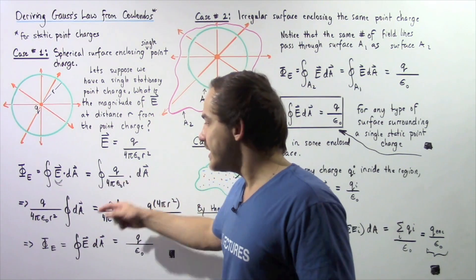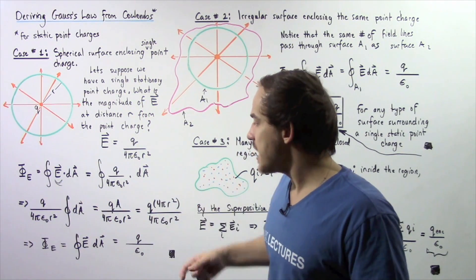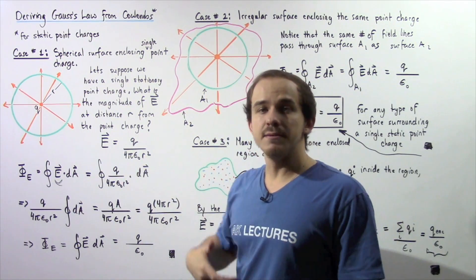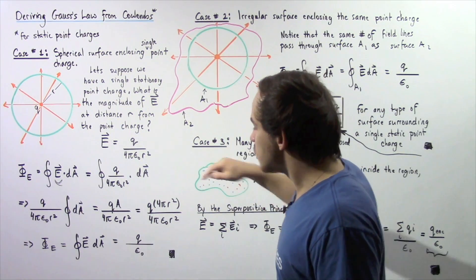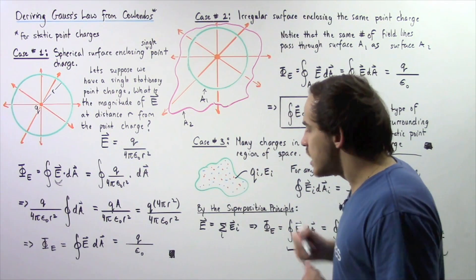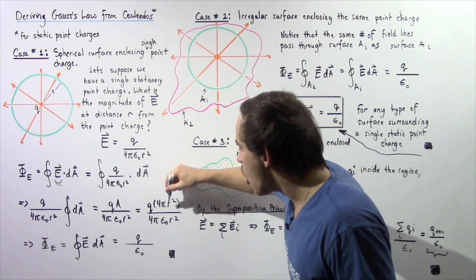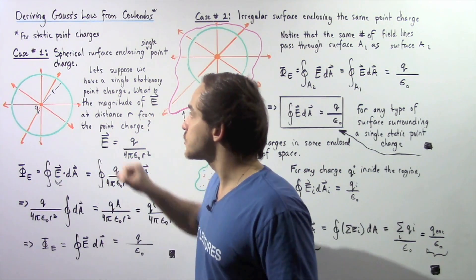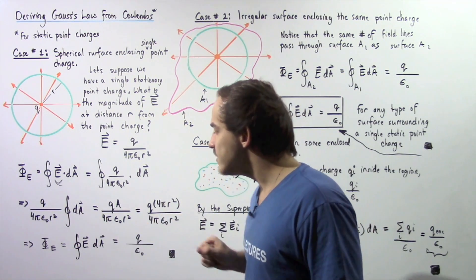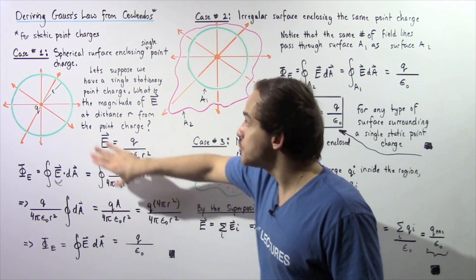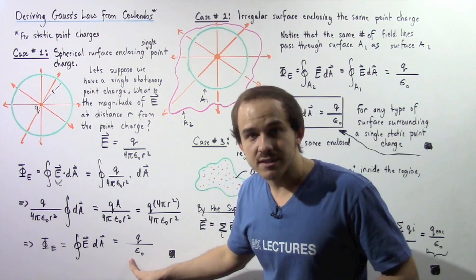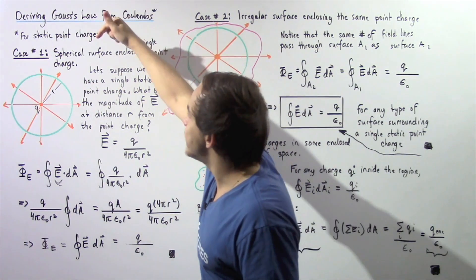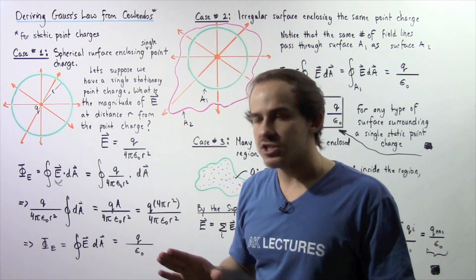If we evaluate this integral, we get that ratio multiplied by the surface area A. Because we're dealing with a spherical surface, the surface area is simply 4π R². We replace A with 4π R², and notice the 4s cancel, the π's cancel, and the R² cancels. All we're left with is that our electric flux equals Q divided by ε₀. We've derived Gauss's law from Coulomb's law for case number one: a spherical surface enclosing a single stationary point charge.